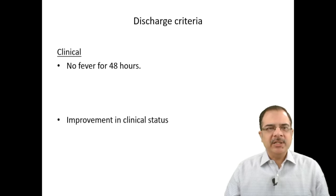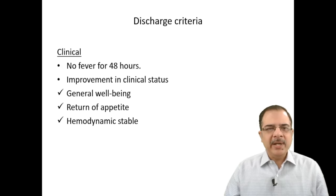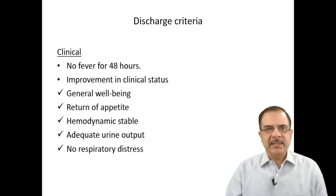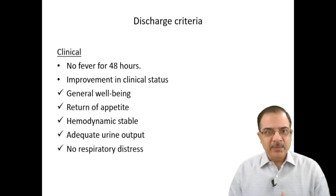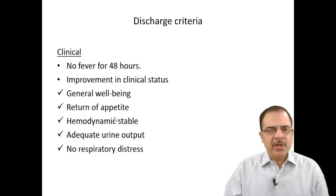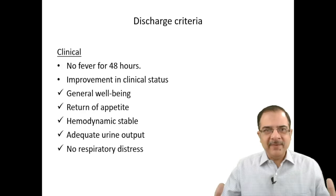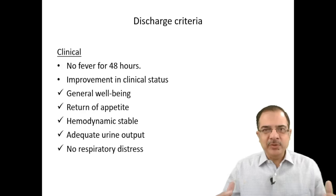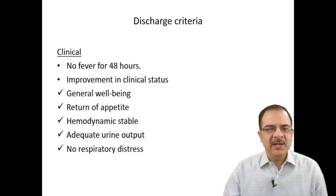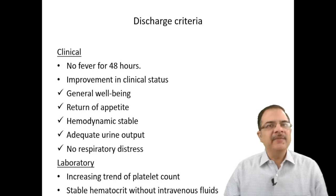Discharge criteria require all of the following: patient should be afebrile for 48 hours, improvement in clinical status (good general well-being, accepting orally with return of appetite, hemodynamically stable, passing adequate urine, no respiratory distress). Return of appetite is important as it indicates peritoneal congestion is reducing and fluid is returning to blood vessels. Lab criteria: increasing trend in platelet count and stable hematocrit without IV fluids.